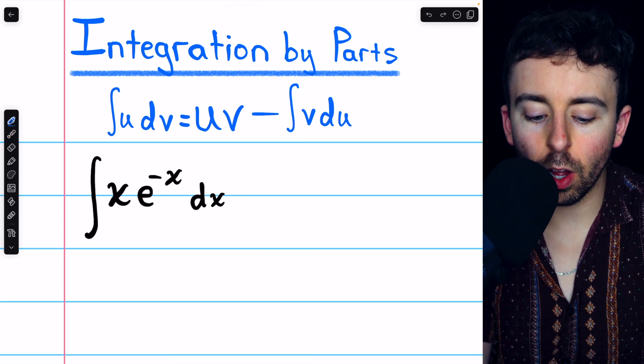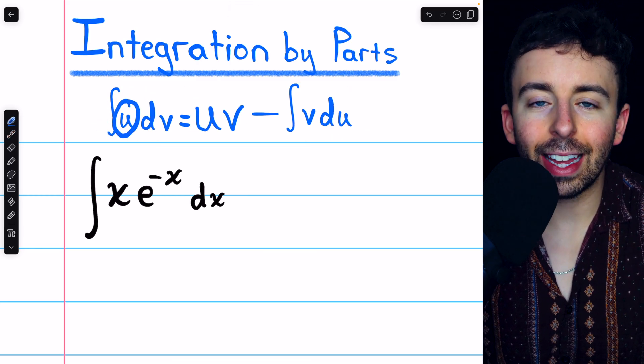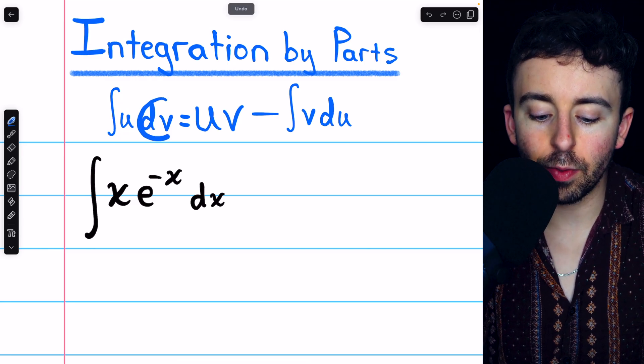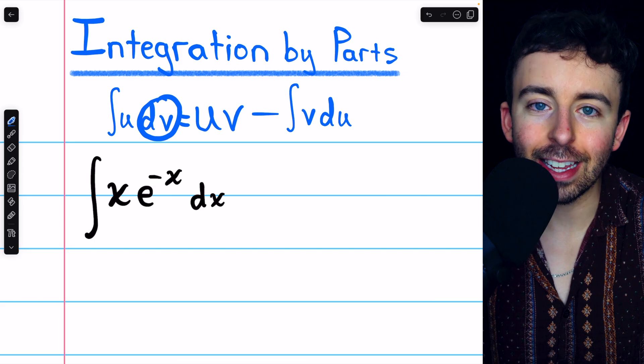To apply this formula, we generally want to select u so that it gets simpler when we differentiate it. And for dv, we want to pick something that we can integrate easily.